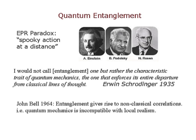Quantum entanglement and the EPR paradox were invented to try to show that there are holes in quantum mechanics. Quantum entanglement is what Einstein called 'spooky action at a distance.' It was Schrödinger who distilled the notion of quantum entanglement from this paper and made the remarkable statement: 'I would not call entanglement one but rather the characteristic trait of quantum mechanics, the one that enforces its entire departure from classical lines of thought.'